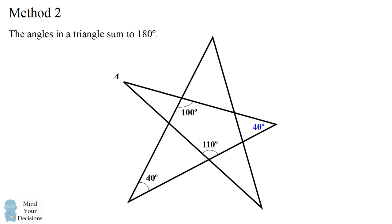We now consider another triangle which involves angle A. The other angles are 110 and 40 degrees. Therefore, angle A will equal 180 minus 110 minus 40. So we directly get that angle A equals 30 degrees. And we get to our answer much quicker.